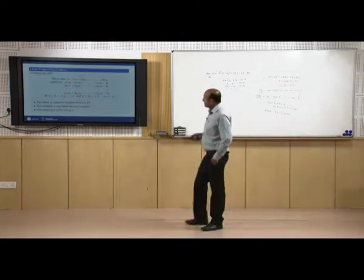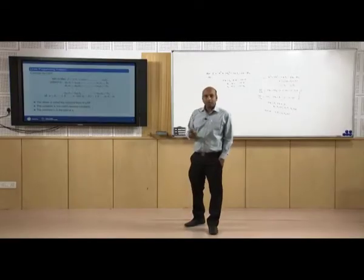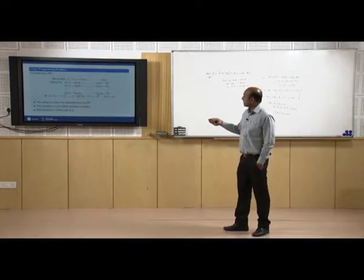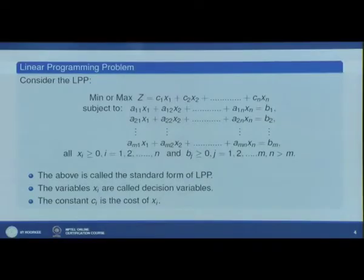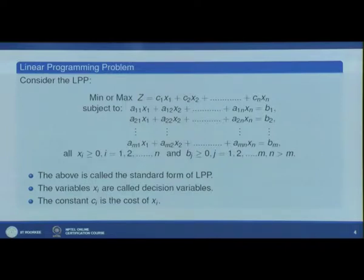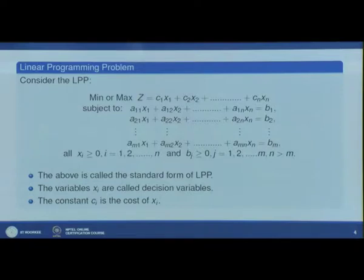Linear programming problems (LPPs) have a linear objective function and all linear constraints. If all constraints are written as equations with non-negative right-hand sides and all variables non-negative, the problem is in standard form. The variables xᵢ are called decision variables and their objective coefficients are called costs. Consider the example: maximize Z = 2x₁ + 3x₂ subject to linear constraints.